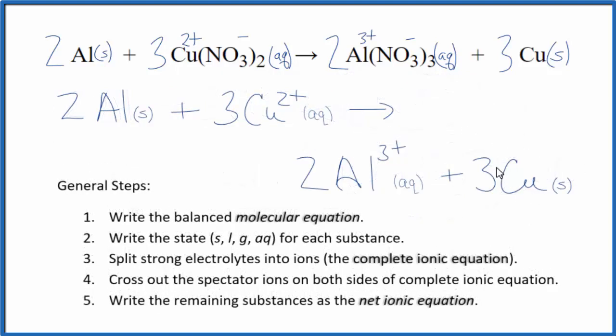So this is the net ionic equation for aluminum plus copper 2 nitrate. You can see that matter is conserved, 2 aluminum atoms, 2 aluminum atoms, 3 copper, 3 copper. Charge is also conserved, 3 times 2 plus, that gives us 6 plus. Here we have 2 times 3 plus, that gives us 6 plus as well. So this is the balanced net ionic equation for Al plus Cu(NO3)2, and this is Dr. B. Thanks for watching.